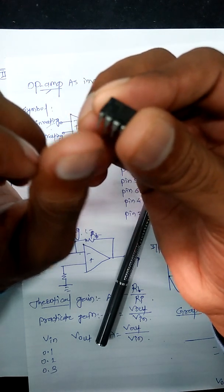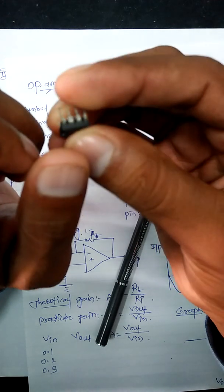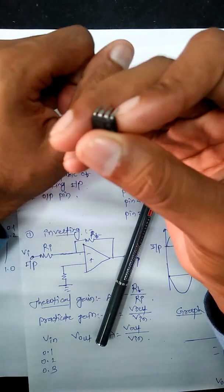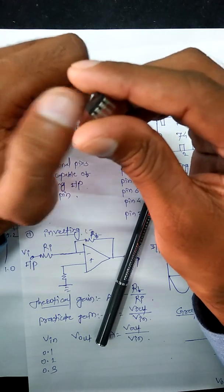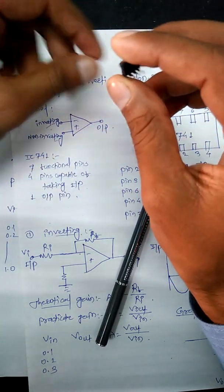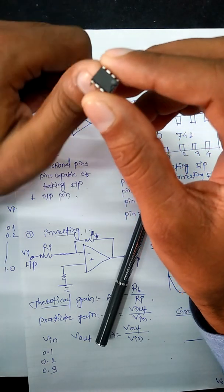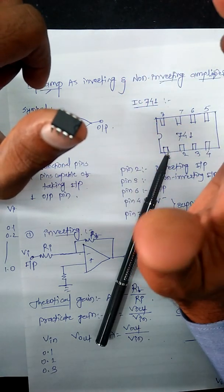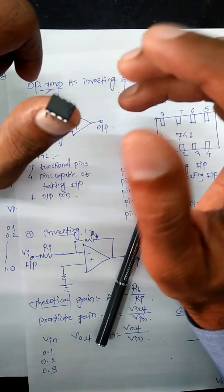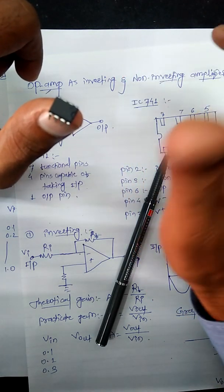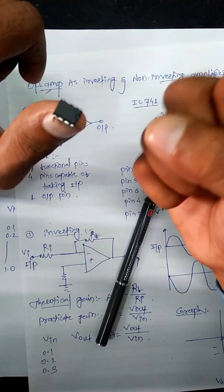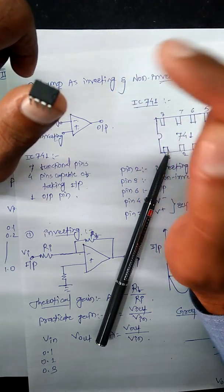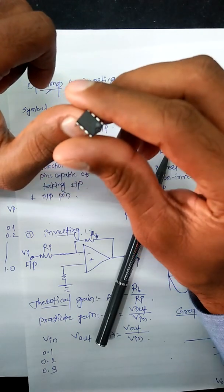The dot near the notch indicates pin number 1, then pin number 2, 3, 4 on one side and pin number 5, 6, 7, 8 on the other side. What is the meaning of the IC741? In that IC there are 7 functional pins, 4 pins are capable of taking the input, and 1 pin is the output pin — that is called as the IC741.